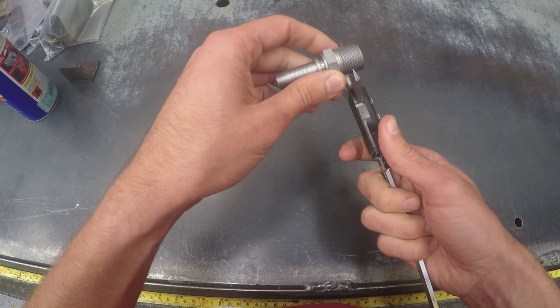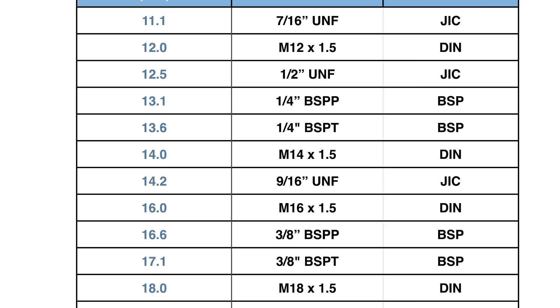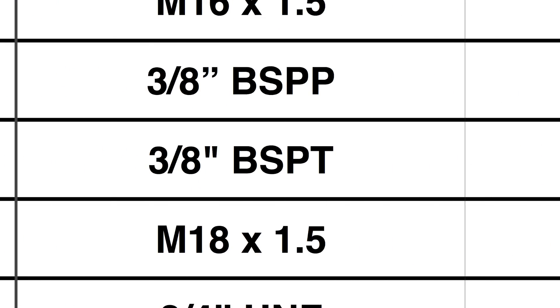To identify the size of the thread you would first measure the OD of the male or ID of the female. Once you have established the size you can then consult a thread chart.